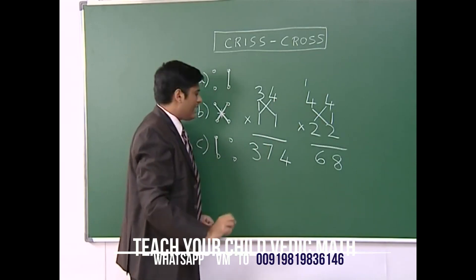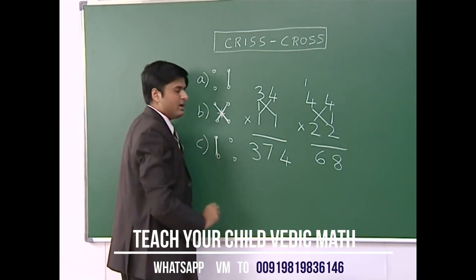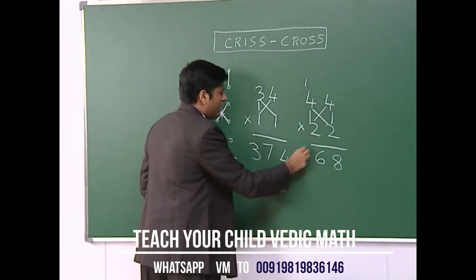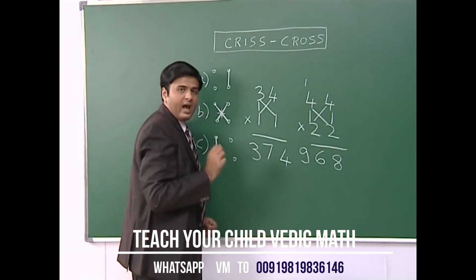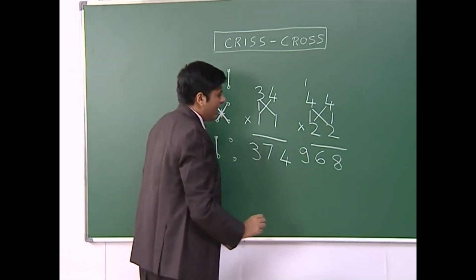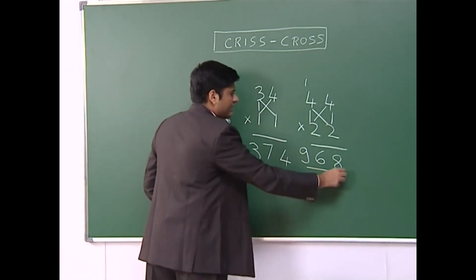And my last step says multiply these two numbers. So 4 times 2 is 8, and 1 carried over gives me 9. As you can see we got the final answer in just one line. Our final answer is 968.